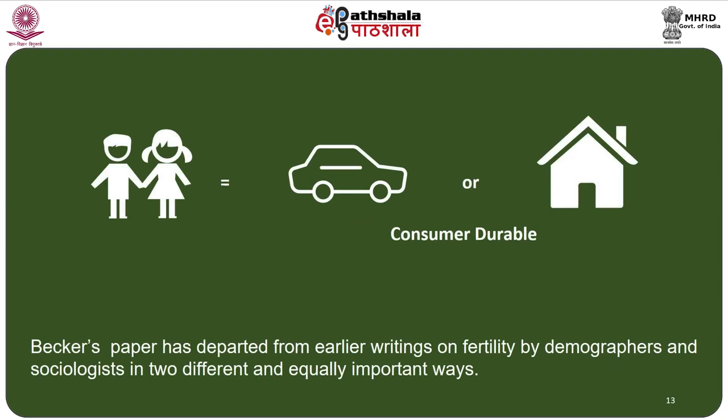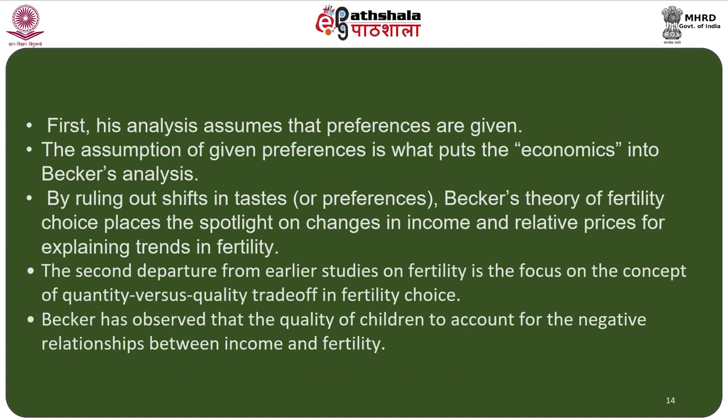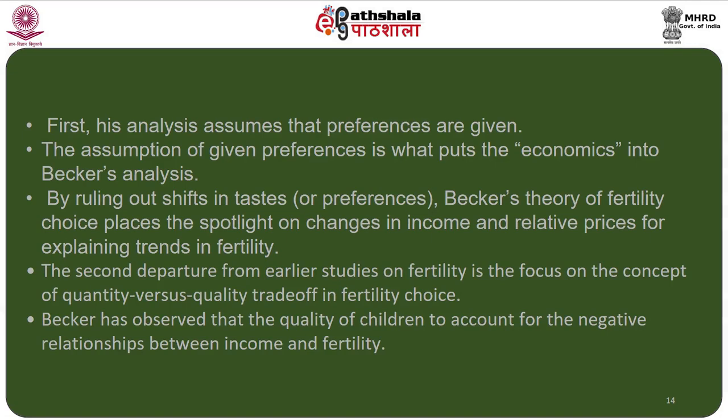Gary Becker in his seminal 1960 paper on the theory of fertility choice considered children as consumer durables like cars or houses. His paper departed from earlier writings by demographers and sociologists in two important ways. First, his analysis assumes that preferences are given — ruling out shifts in taste, placing the spotlight on changes in income and relative prices to explain fertility trends. Second, it introduced the concept of quantity versus quality trade-off in fertility choice, invoking child quality to account for the negative relationship between income and fertility.